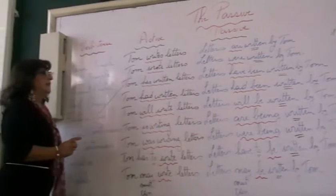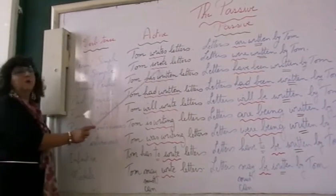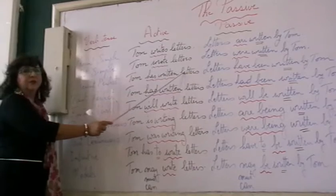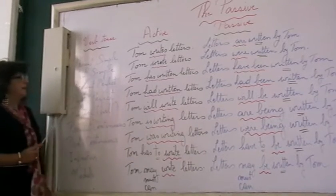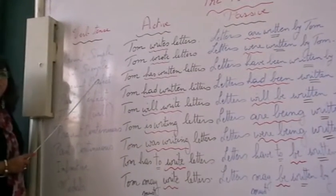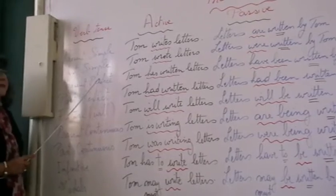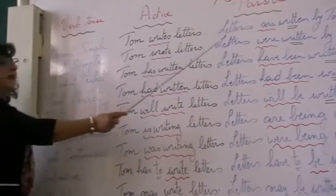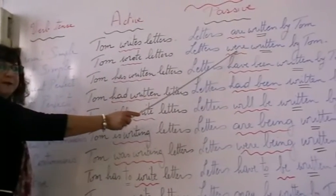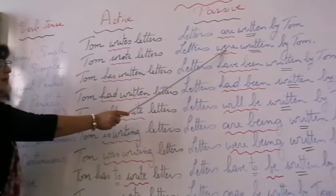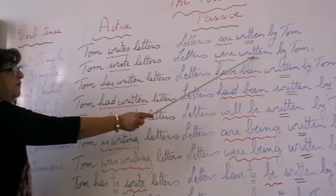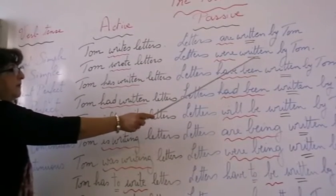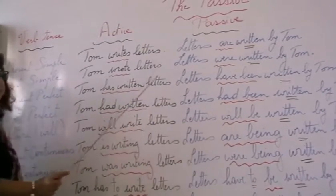Let's take another sentence. Tom wrote letters. This is the past simple tense. So I put 'to be' in the past simple tense: letters were written by Tom. The past simple tense of 'to be' is 'were', followed by the past participle. This is the past simple passive.